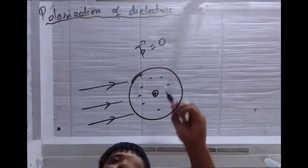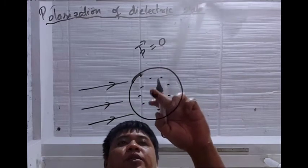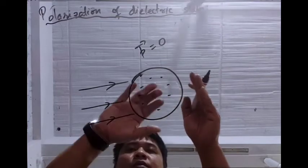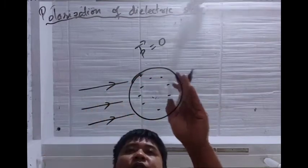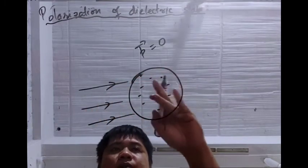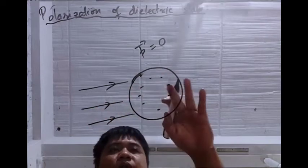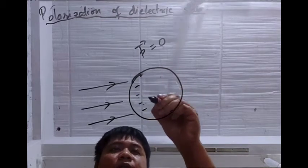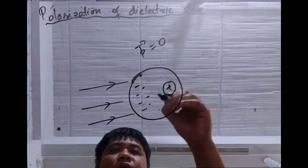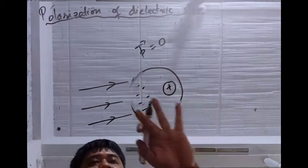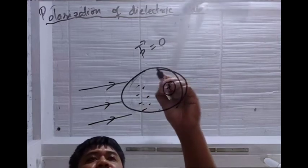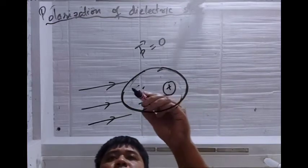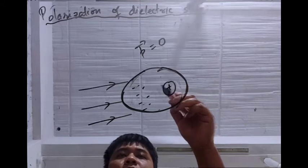If we apply an electric field, this electric field will repel the positive charge to one side and pull the negative charges to the other side. So it means they are polarized — this side negative and this side positive. The atom is stretched like this. That is the polarization of a non-polar atom.